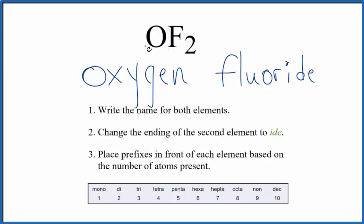For oxygen, even though it's first and we only have one oxygen atom, we never write mono on the first element. We do, however, have a capital letter for the first name.